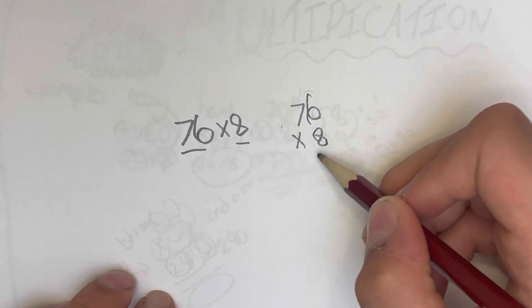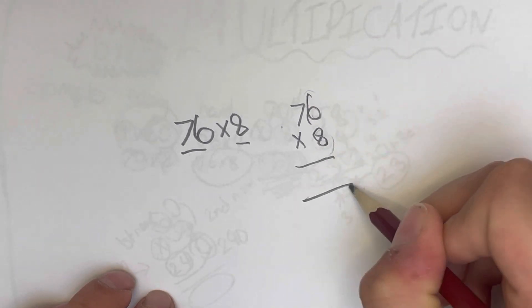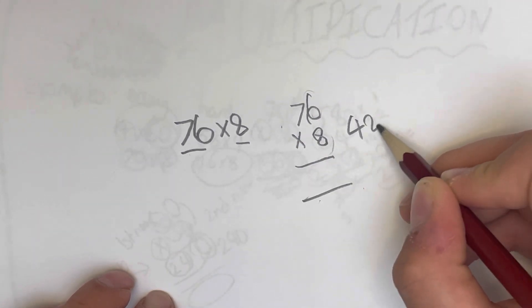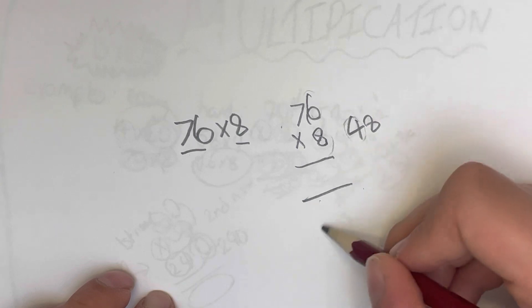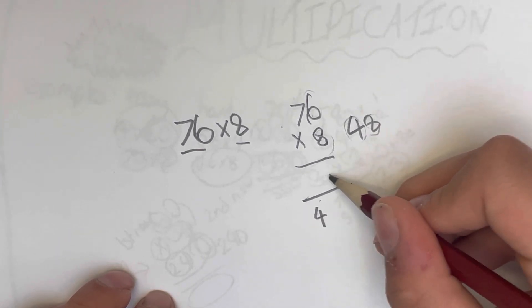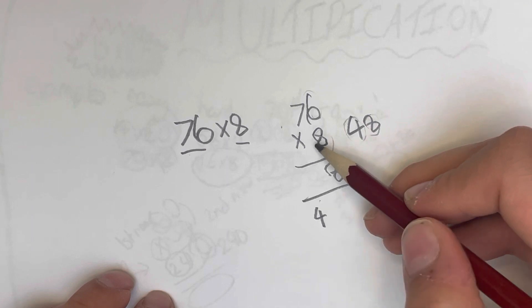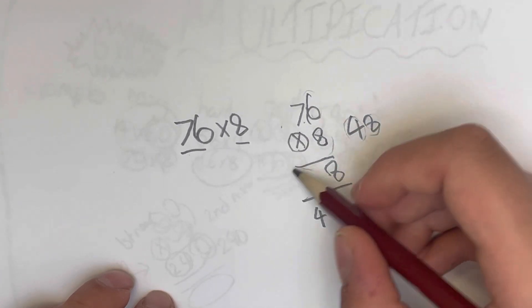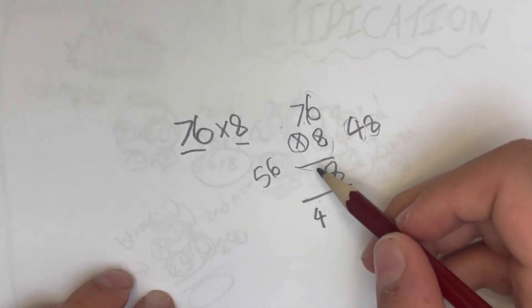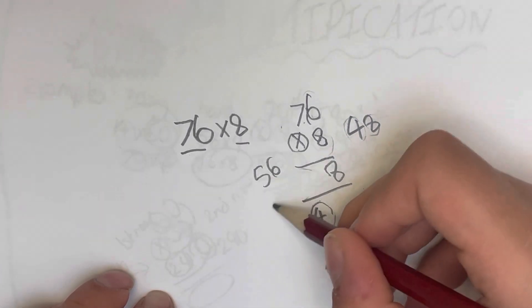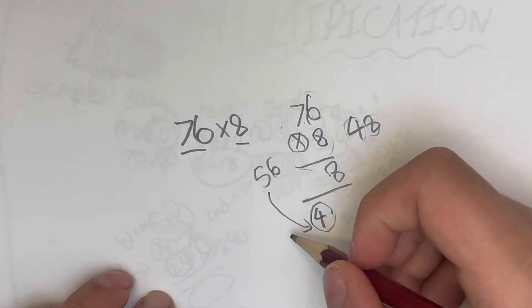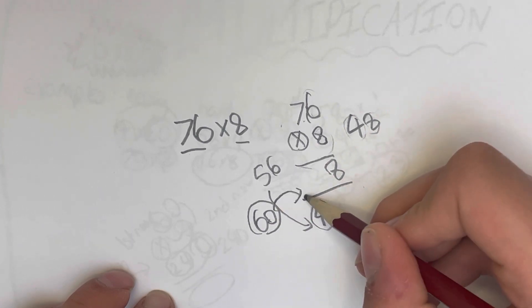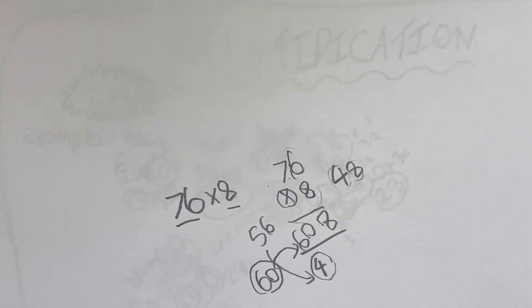So as we know, ones column times by this number. So 6 times 8, we know, is 48. As you know, we put the tens column underneath, so 40, and the ones column here, 8. And then we do 8 times 7, which is 56. And as we know, we have to add the 4 to 56, which gets an answer of 60. So we just put 60 right into there, as we did for the other questions.